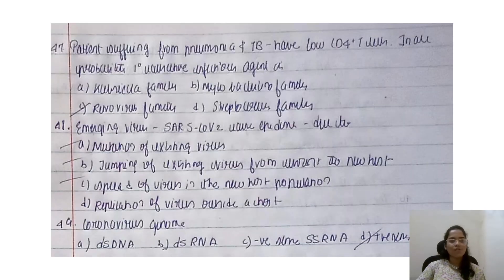A patient suffering from pneumonia and TB has a low CD4 T cell count. The causative infectious agent is from the retrovirus group, because CD4 depletion is characteristic of retroviruses. The answer is retrovirus.